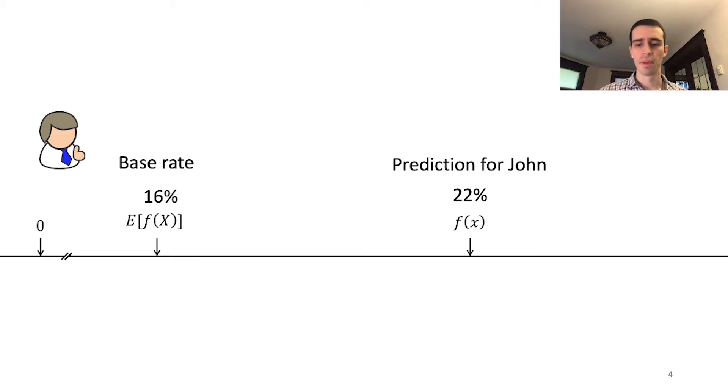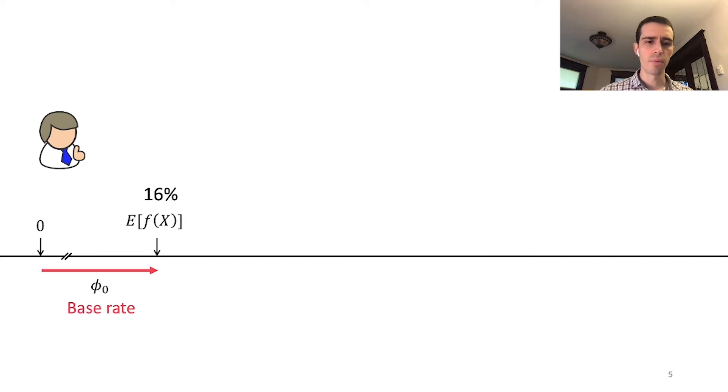SHAP says we need to explain not 22% from zero—zero is arbitrary. We need to explain how we got from the base rate, where we knew nothing about John, to the current prediction of 22%. How do we do this?